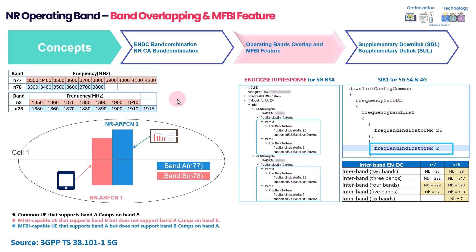The solution is a feature called MFBI — Multi-Frequency Band Indicator. This feature addresses both initial access and carrier aggregation in ENDC scenarios. Assuming one device supports only N78 and another only N77, you configure both frequencies at the site using MFBI. In standalone, the SIB1 delivers system information with both frequency bands included.